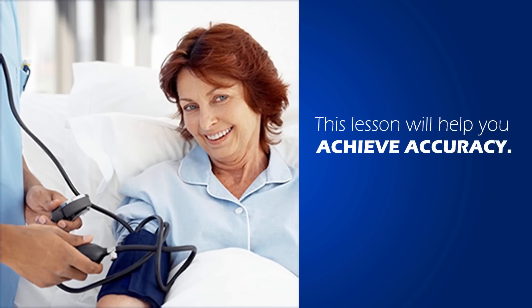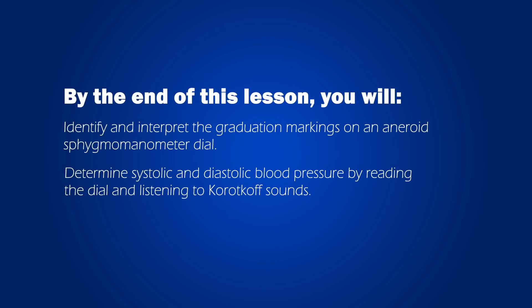This lesson will help you achieve accuracy when taking blood pressure measurements. By the end of this lesson, you will identify and interpret the graduation markings on an aneroid sphygmomanometer dial and determine the systolic and diastolic blood pressure by reading the dial and listening to the Korotkov sounds.